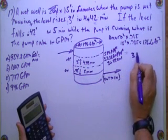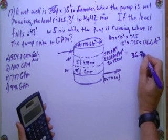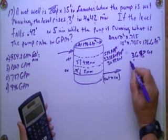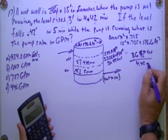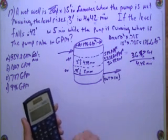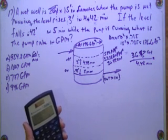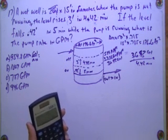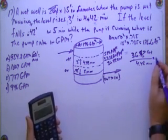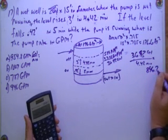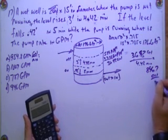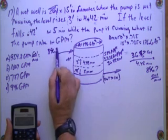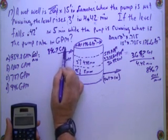And that's in 4.42 minutes. So I'm going to take 3,693 gallons divided by 4.42 minutes. 896.7 gallons per minute. So that's what's coming in. 896.79 GPM is coming in.